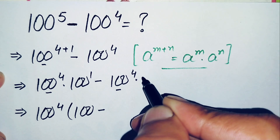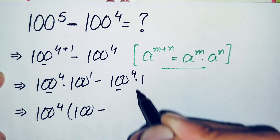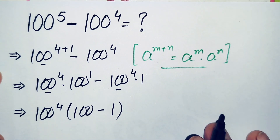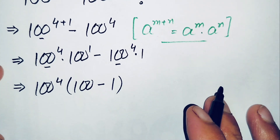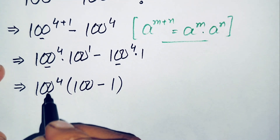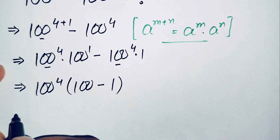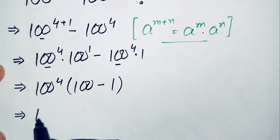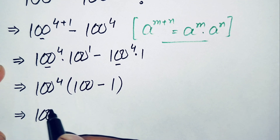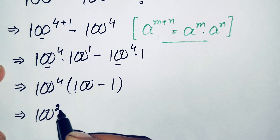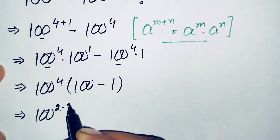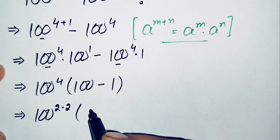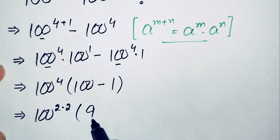Since we can multiply 1 with any number, only 1 is left in that bracket. And 100 minus 1 gives us 99. So we now have 100 raised to power 4 times 99.